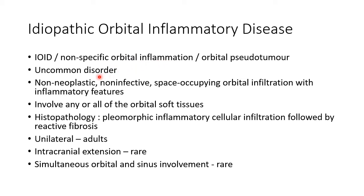IOID is an uncommon disorder in which there is non-neoplastic, non-infective space-occupying orbital infiltration with inflammatory features. It can involve any or all of the orbital soft tissues. Histopathology shows pleomorphic inflammatory cellular infiltration followed by reactive fibrosis. It is unilateral in adults, whereas it can be bilateral in children. Intracranial extension is rare, and simultaneous orbital and sinus involvement is also rare.